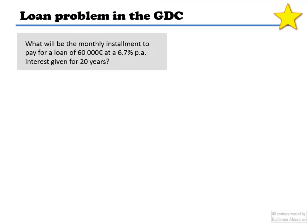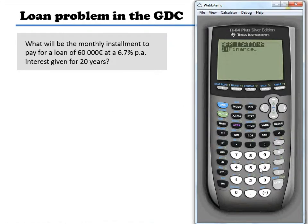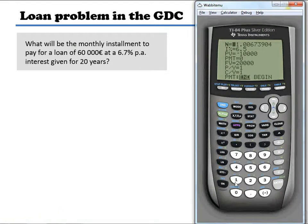Let's do a loan problem in a GDC. Here it is, a typical one. What's the monthly installment for a loan of 60,000 euros at 6.7% interest per annum for 20 years? First of all, when you open a TVM solver, you're going to have the past exercise around. Now let's think about the time period first. How often are things going on? 20 times 12. Remember, you always have to think how often things are happening. It's not the number of years, that's a typical mistake.